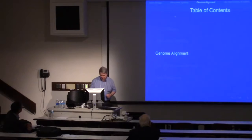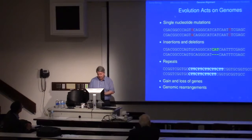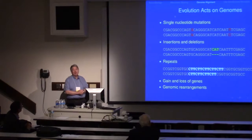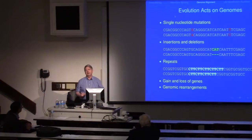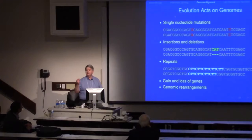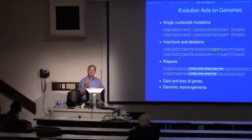Genome alignment is the second project. Thinking about evolution: it acts on genomes, so we think of an ancestral genome, mutations occur, and we get a current genome. The kinds of mutations we're likely to see include single nucleotide changes, insertions and deletions, and varying repeats — for example, four versus five copies of CTT giving different numbers of repeats.